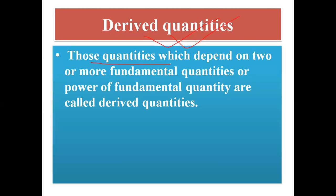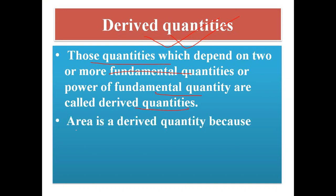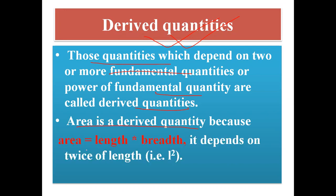Now, derived quantities. Those quantities which depend on two or more fundamental quantities, or on a power of a fundamental quantity, are called derived quantities. For example, area is a derived quantity. We know that area equals length multiplied by breadth. From here, we can see that area is derived from two times the length — and length is a fundamental quantity — so area is a derived quantity.